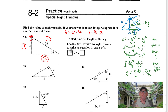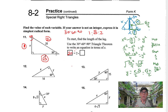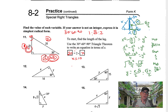For this problem, we have 20 equal to 2 times X, which means X is 10. We can verify: 20 divided by 2 gives us 10, and 10 times 2 gives us 20. The Y side is going to be 10 times the square root of 3, so 10 root 3. We already have 20 for the hypotenuse side.